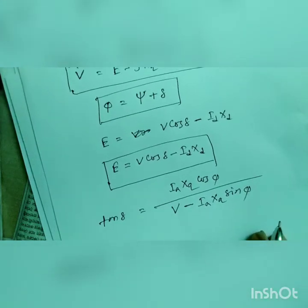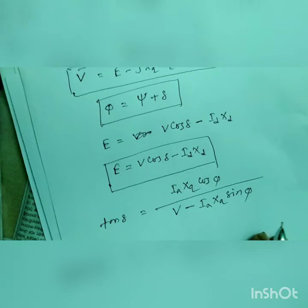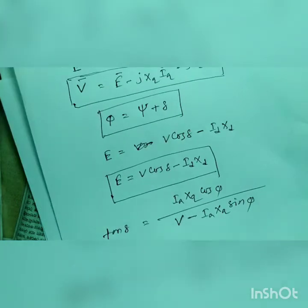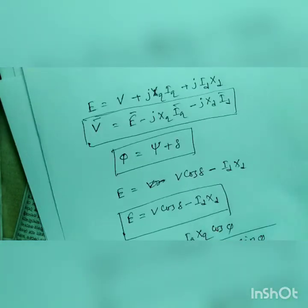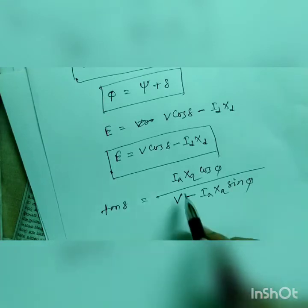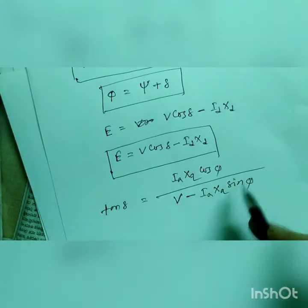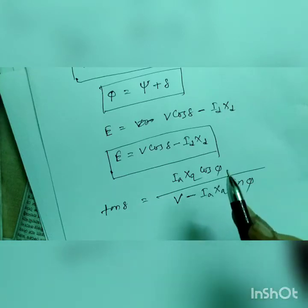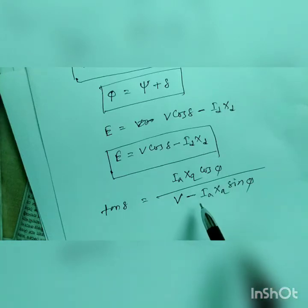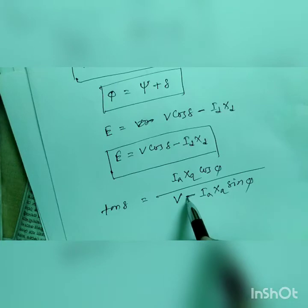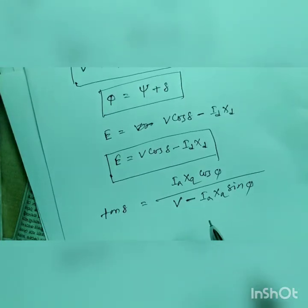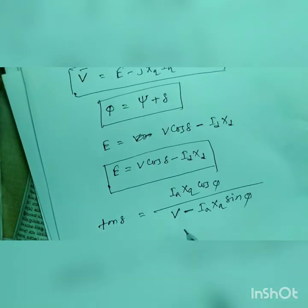It's very easy to remember. In what happened in case of lagging load, the formula was just ia xq cos phi by v plus ia xq sin phi. But in case of leading power factor, just plus became minus.